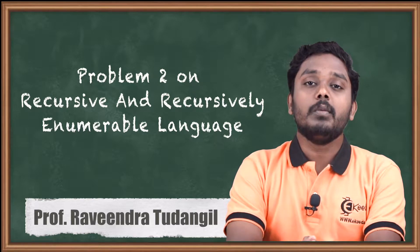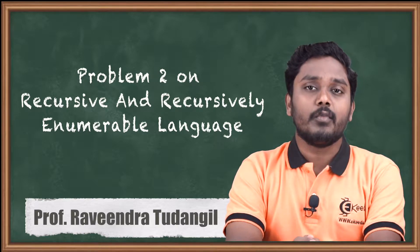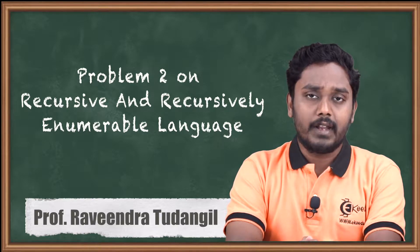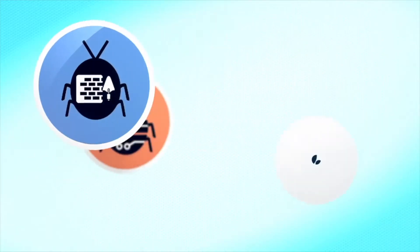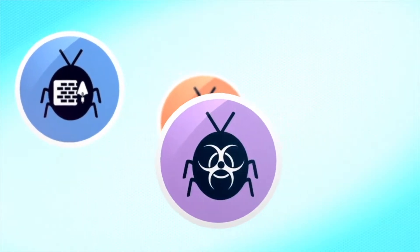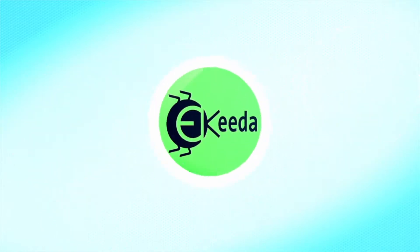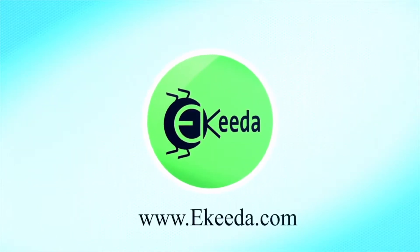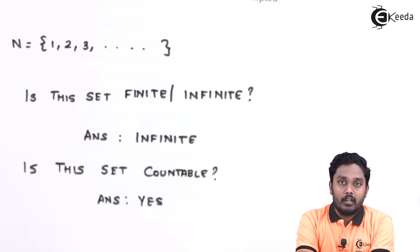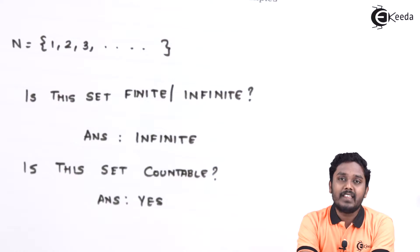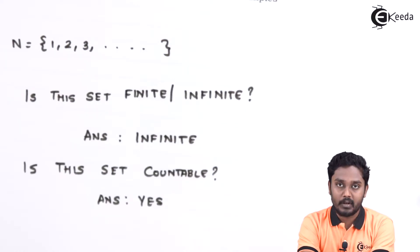What do you mean by a set being countable? Is it the same as finite and infinite? This set is infinite but still countable. Let us see the actual classification of sets on these two properties: finite, infinite, countable, uncountable.